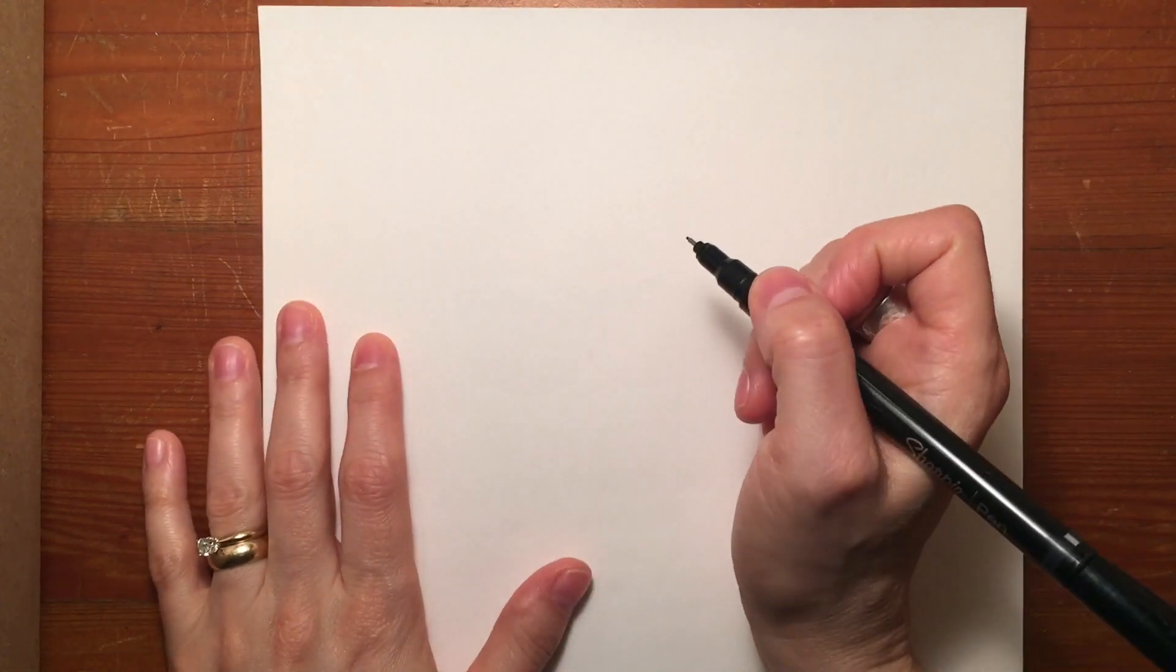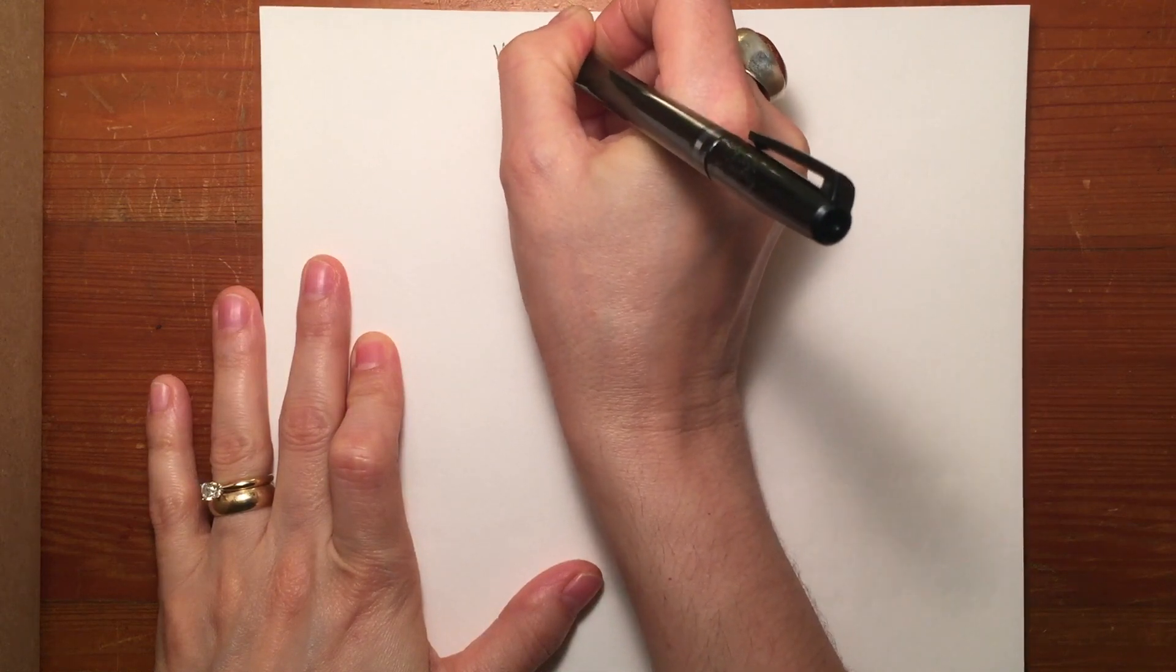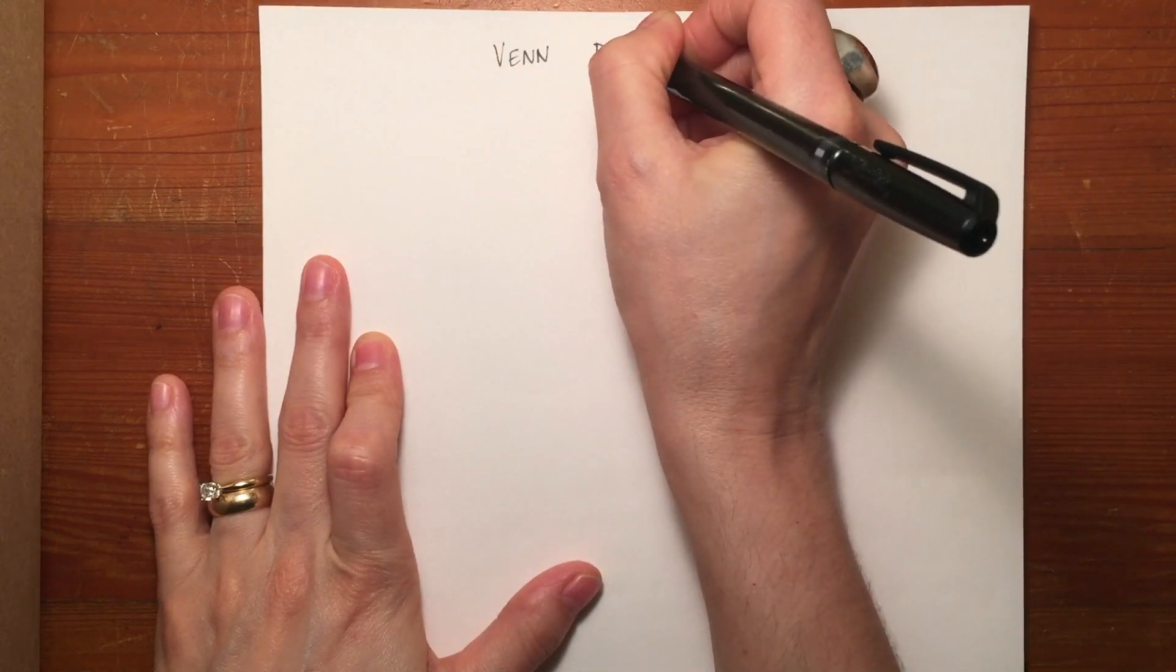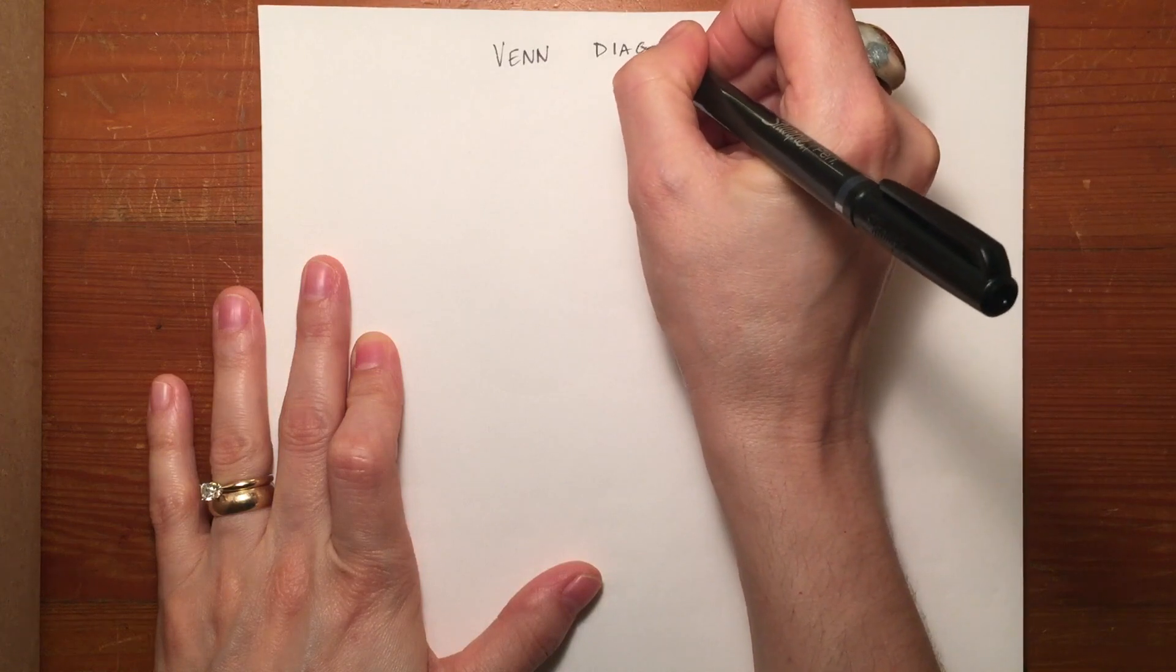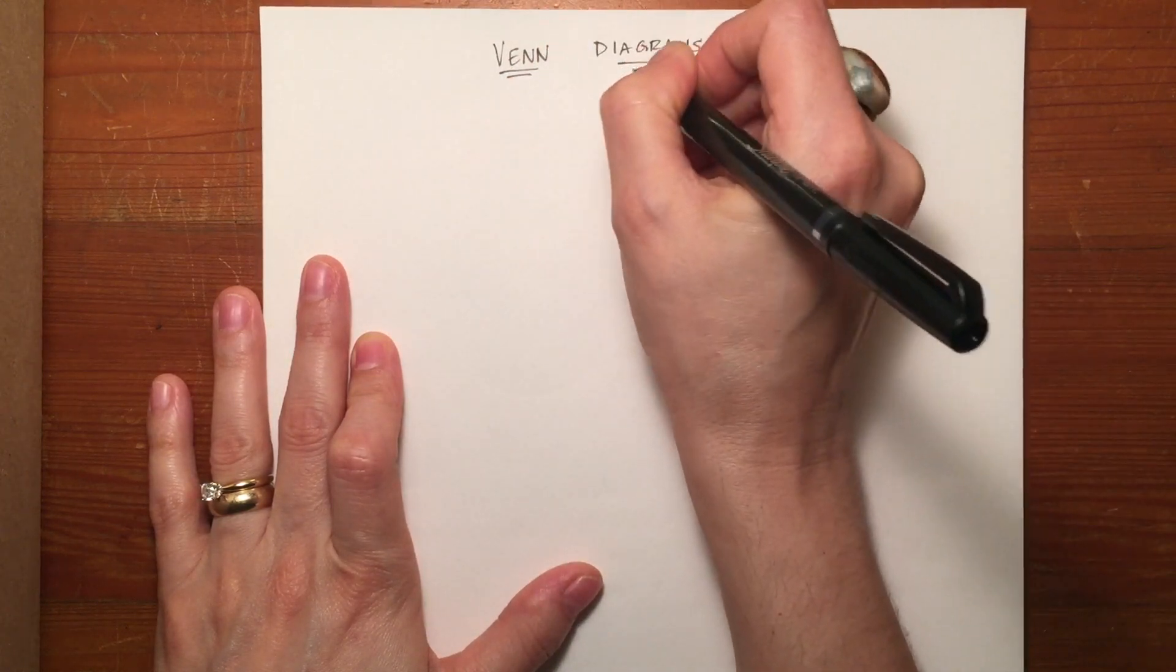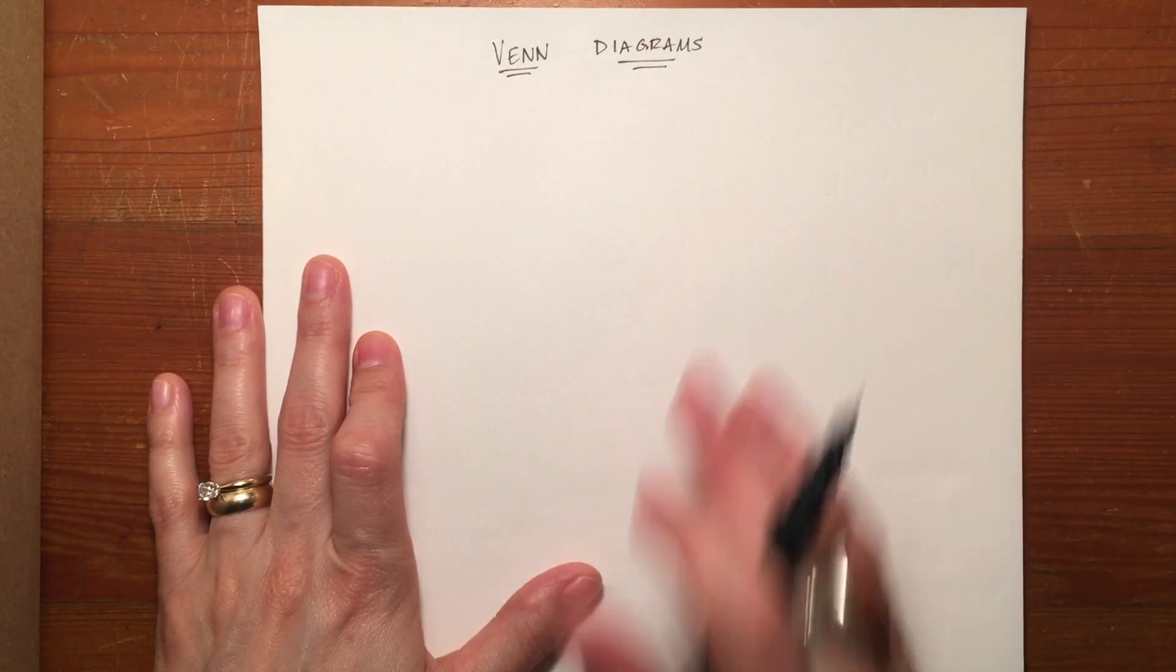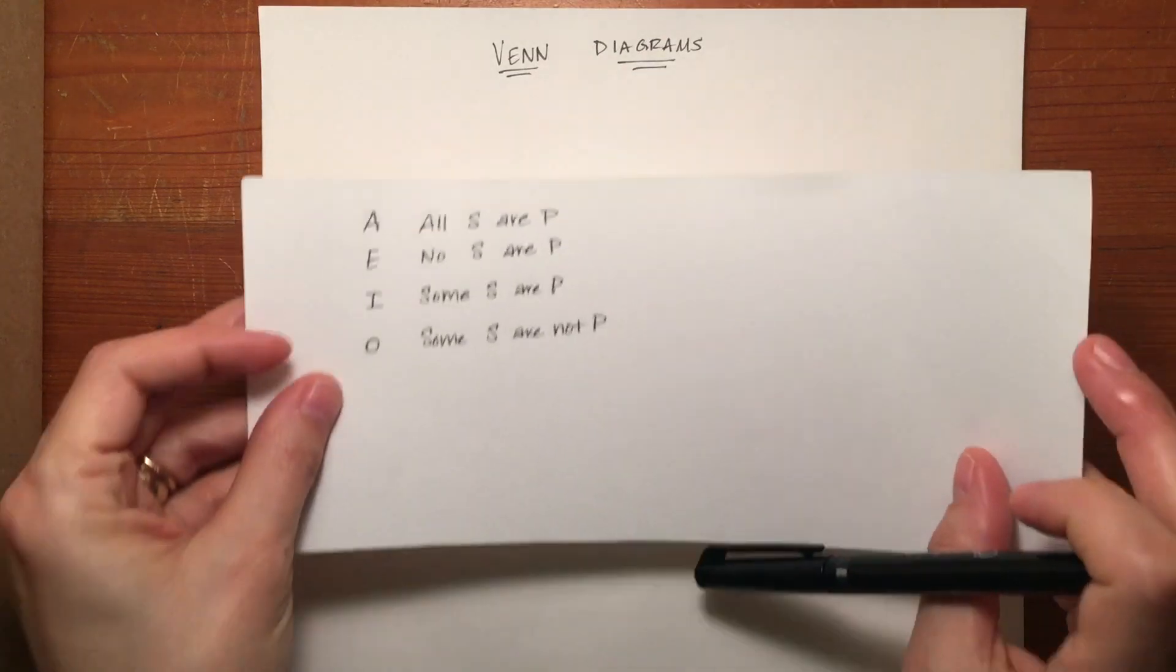In this video we'll learn what Venn diagrams are and what the basic rules are for them. Because you're dealing with categorical syllogisms, we're still dealing with your A, E, I, and O statements in standard form just like you did before.